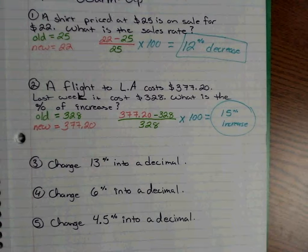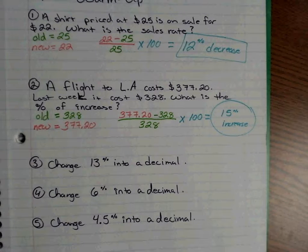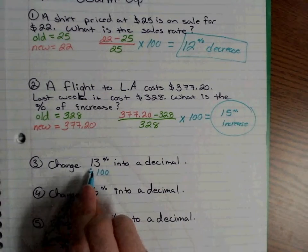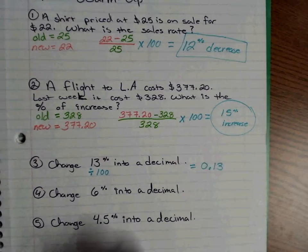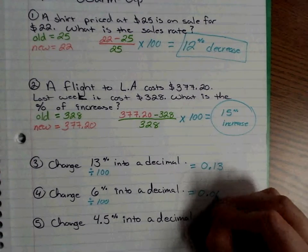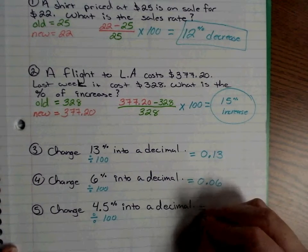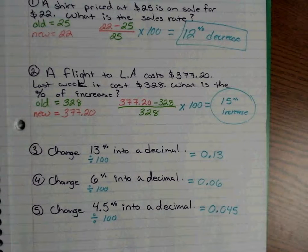Problems three, four, and five are changing percentages into decimals. How do we change a percent into a decimal? Courtney said division by 100, because all percents are out of 100. So if I take 13 and divide by 100 it gives me 0.13; 6 divided by 100 gives 0.06; 4.5 divided by 100 gives 0.045.